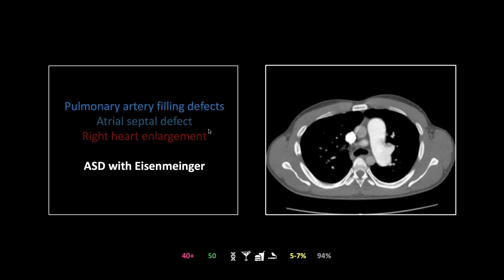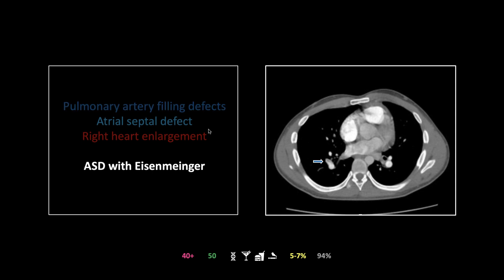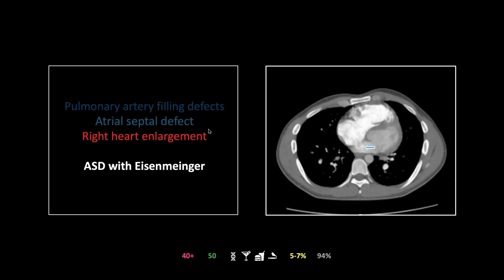There are pulmonary arterial filling defects — one in the left pulmonary artery, which is enlarged, and one in the right. There is a large atrial septal defect with right-to-left shunting, and right heart enlargement related to chronic left-to-right shunting. This is an ASD with Eisenmenger syndrome: the patient had a pulmonary embolism that increased right-sided pressures and caused right-to-left shunting across the ASD — pretty unusual to catch on CT.